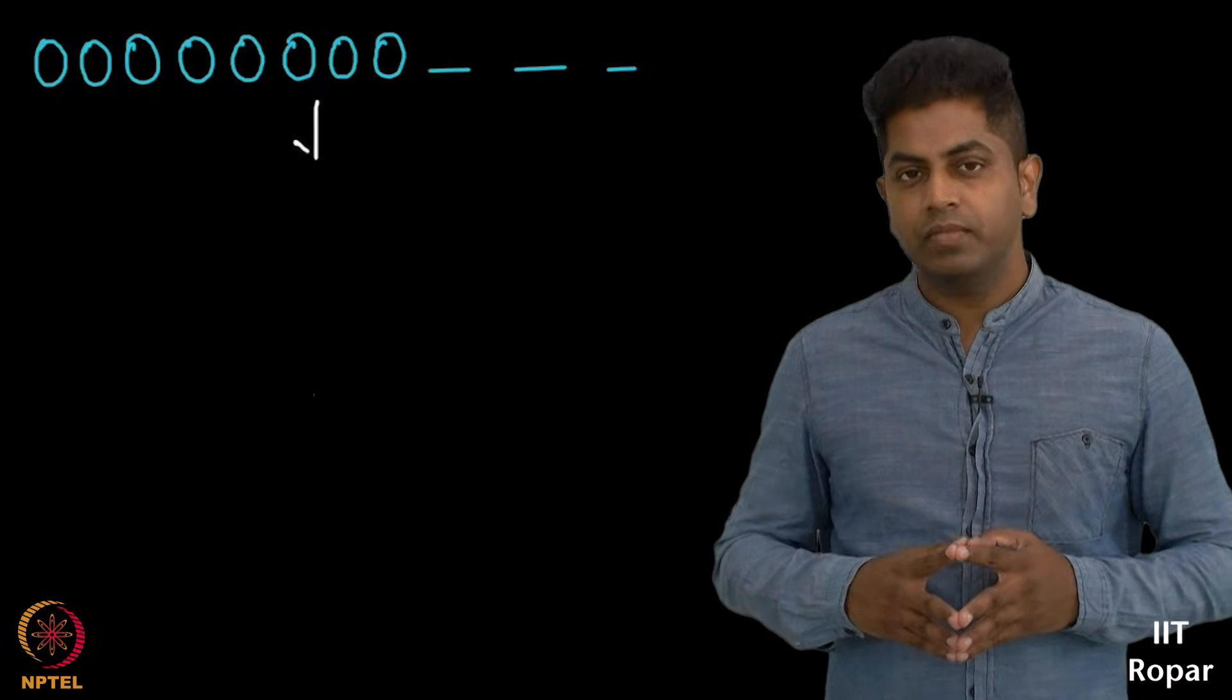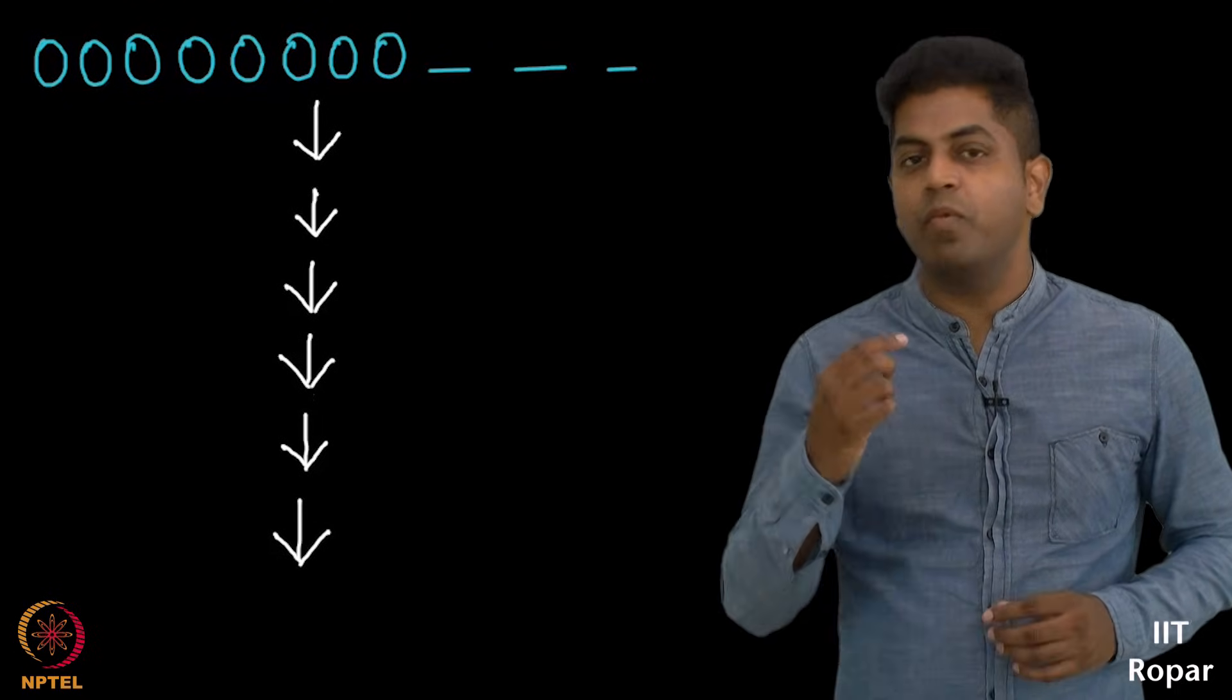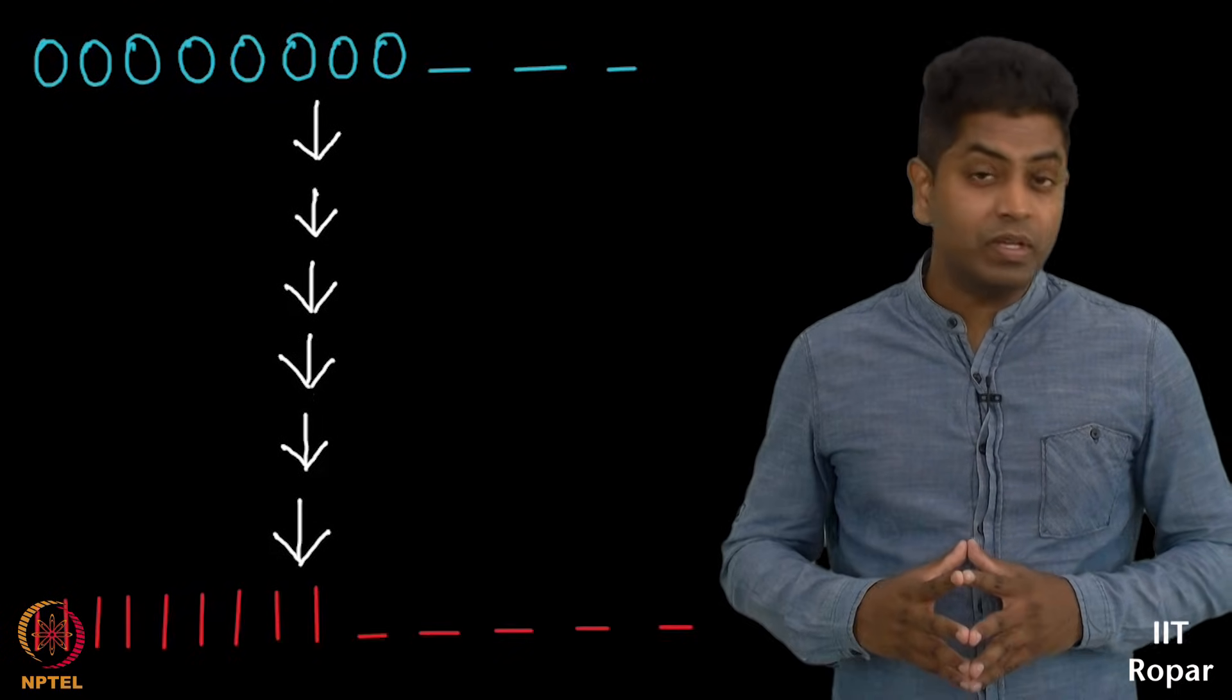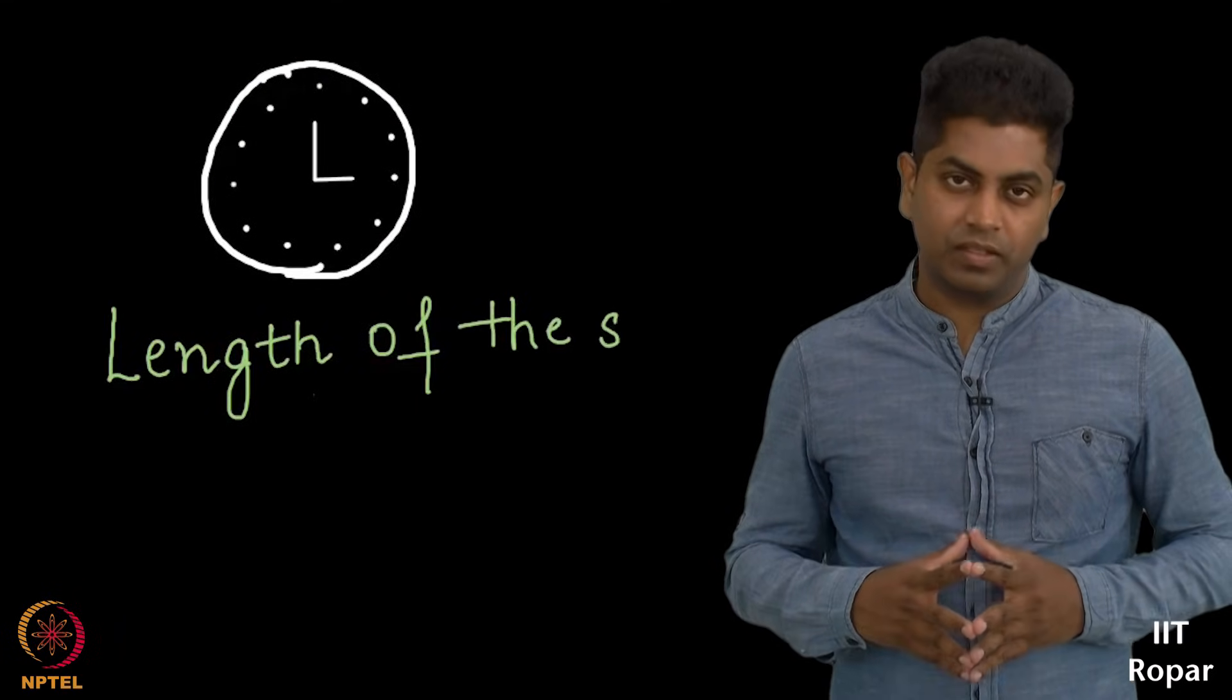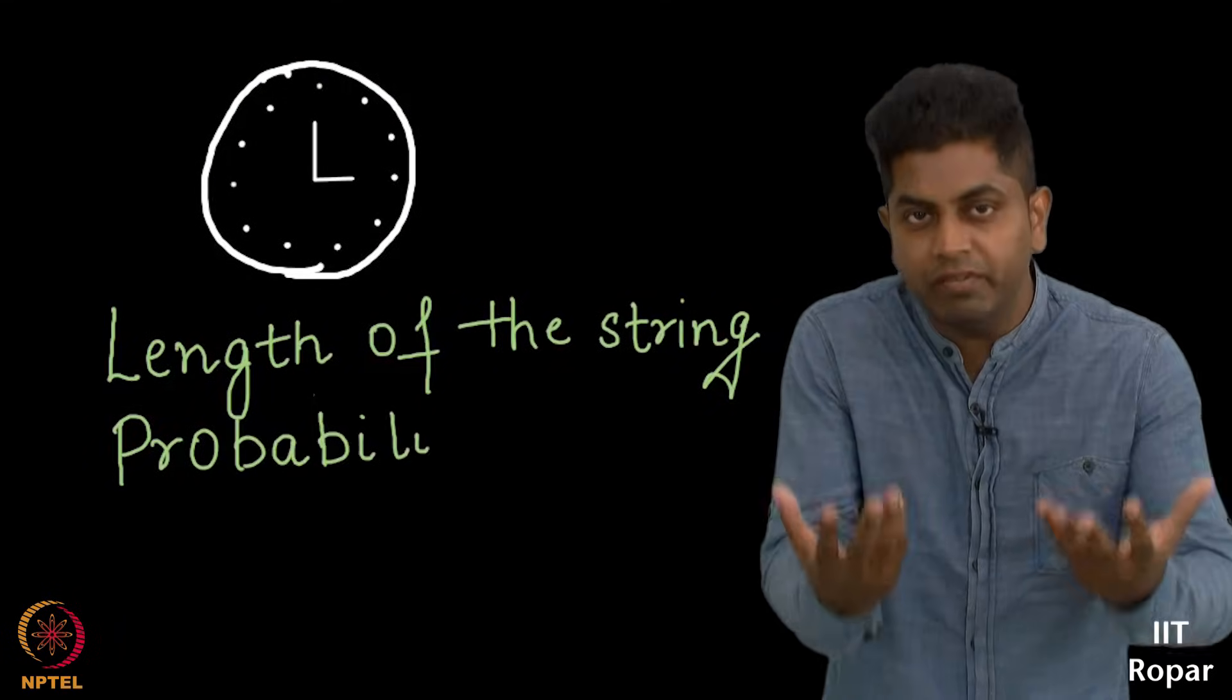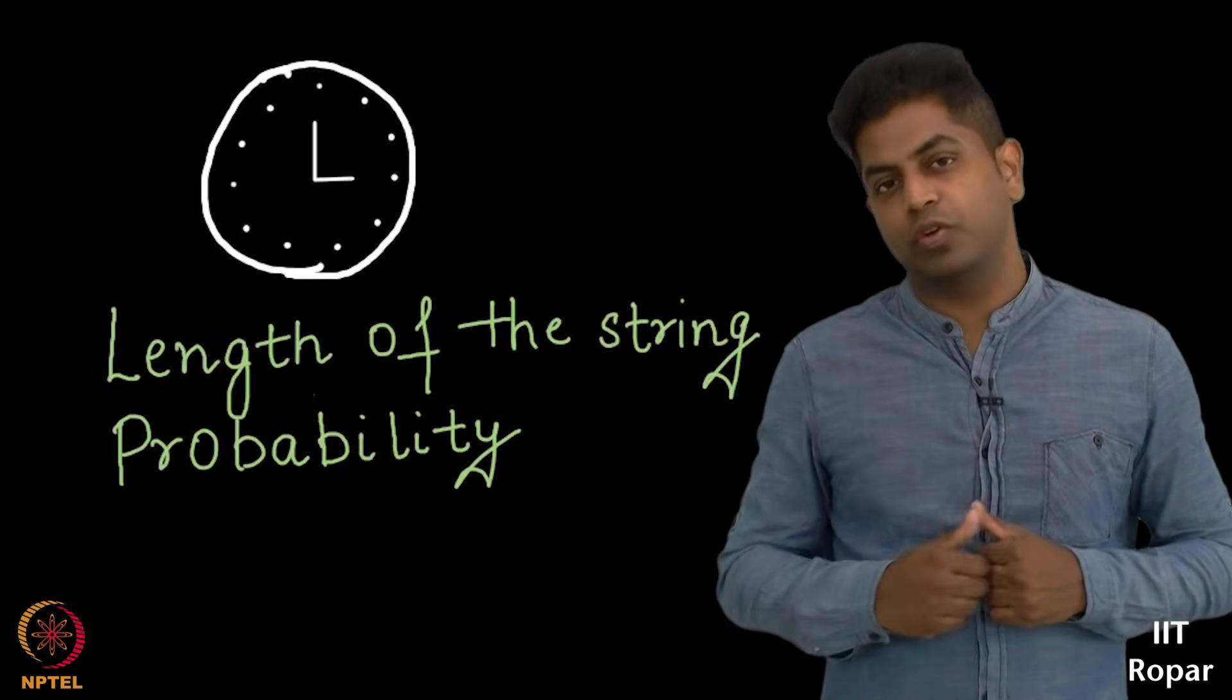Keep doing it and eventually you will see that all these zeros will become ones. How much time does it take? It is based on the length of the string and the probability with which you switch zeros to ones.